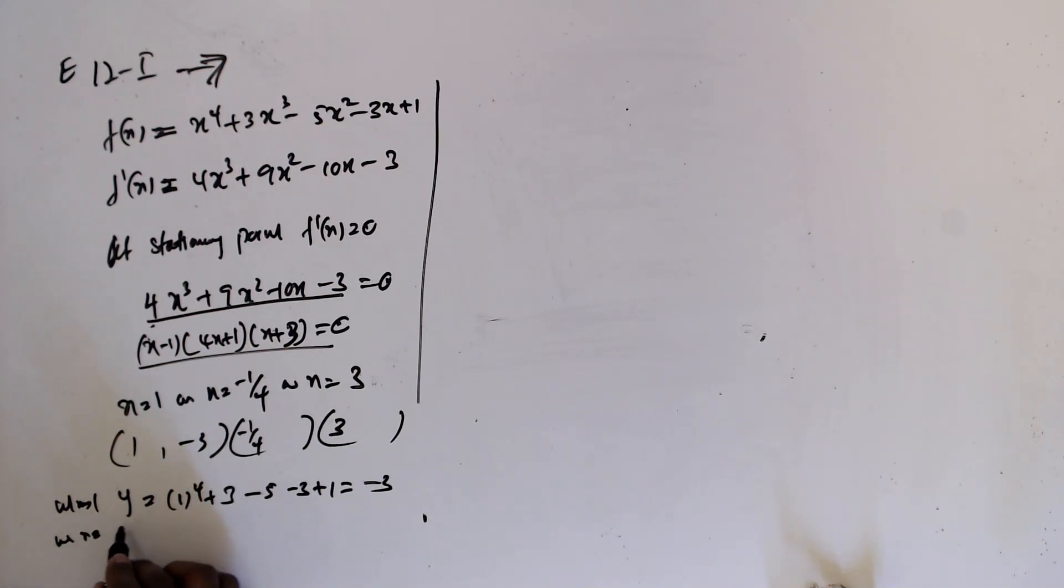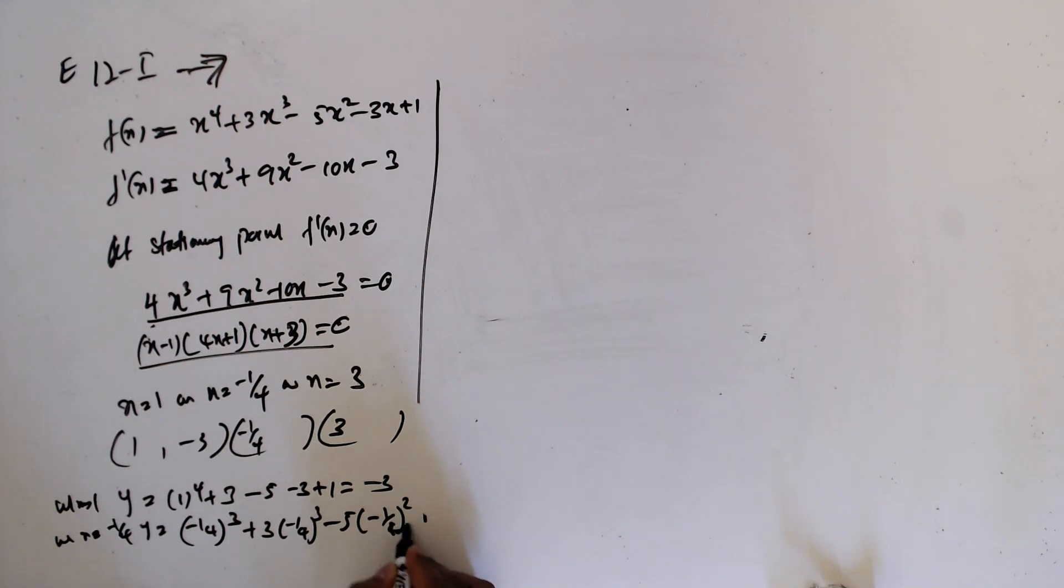When x equal minus 1/4, y equal (-1/4)^3 plus 3(-1/4)^5 minus (-1/4)^2 minus 3 times (-1/4) plus 1 will give 22 from...